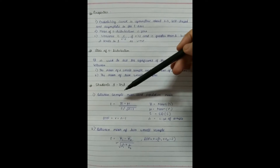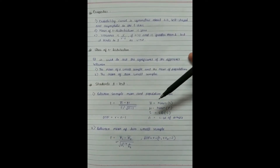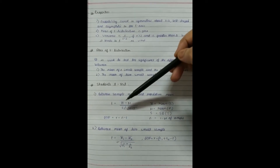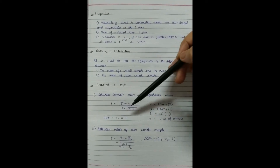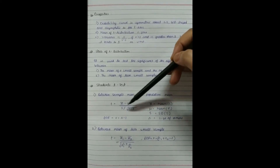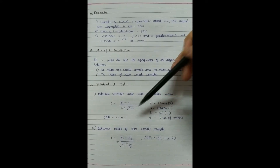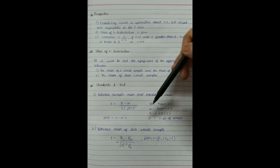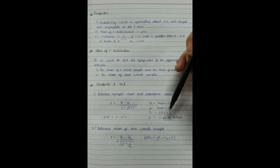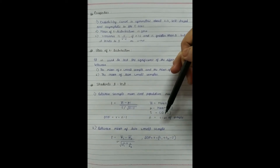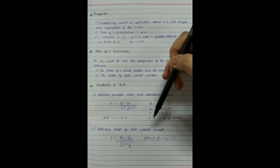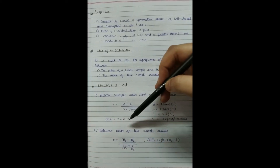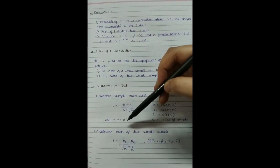The formula used to test between the sample mean and the population mean is: t = (x̄ − μ) / (s / √(n−1)), where x̄ is the sample mean, μ is the population mean, s is the standard deviation of the sample, and n is the sample size. The degree of freedom is v = n − 1.